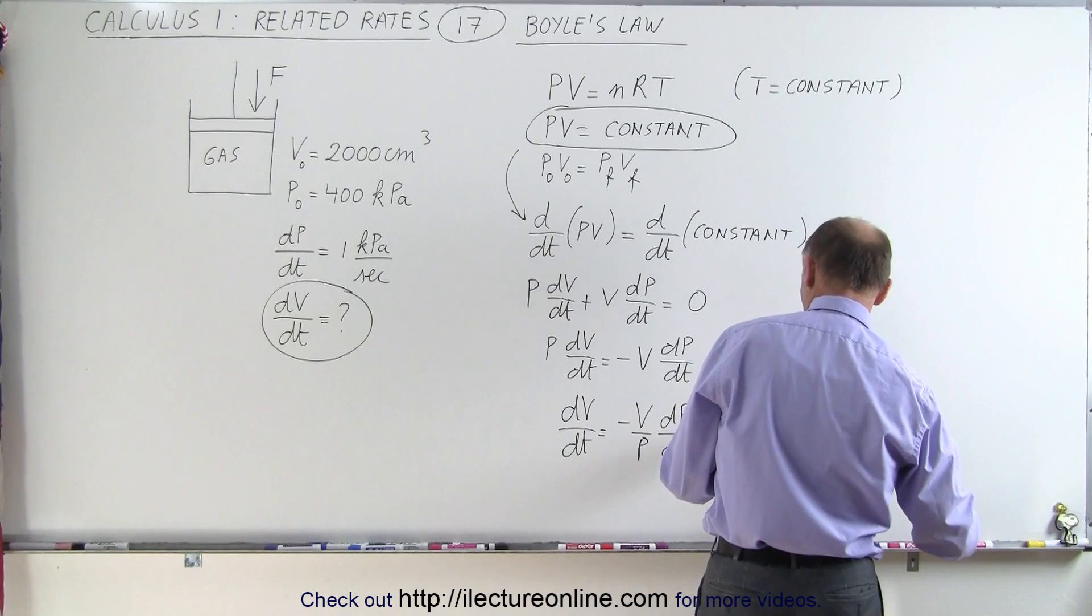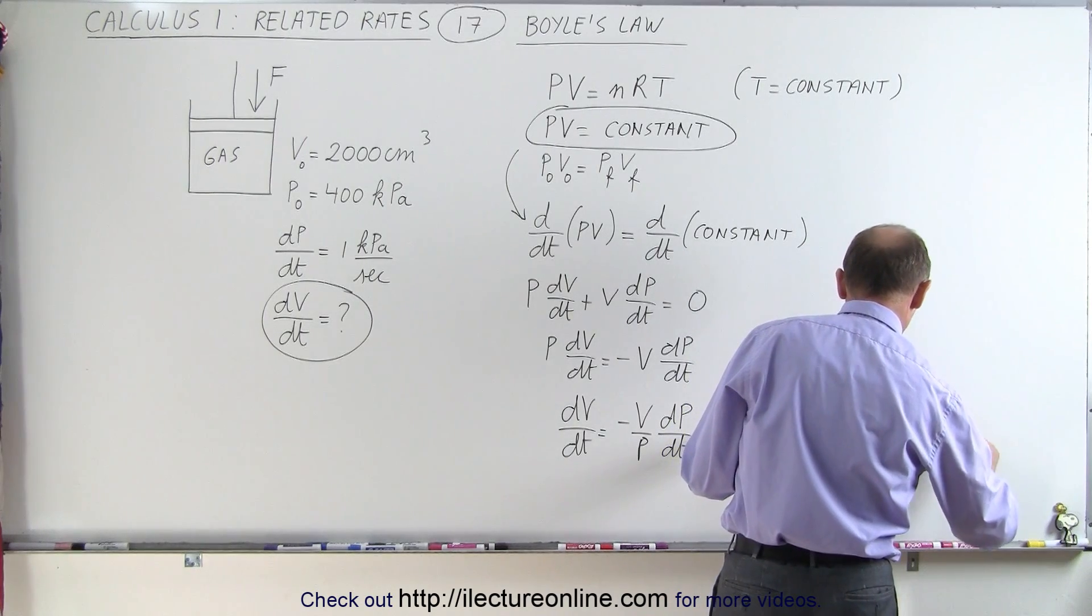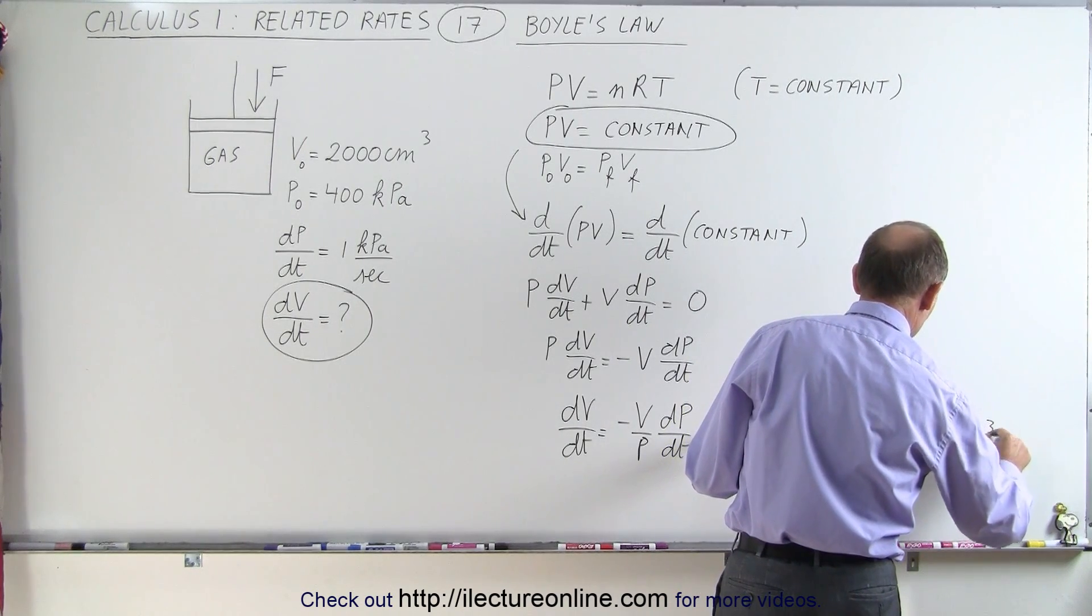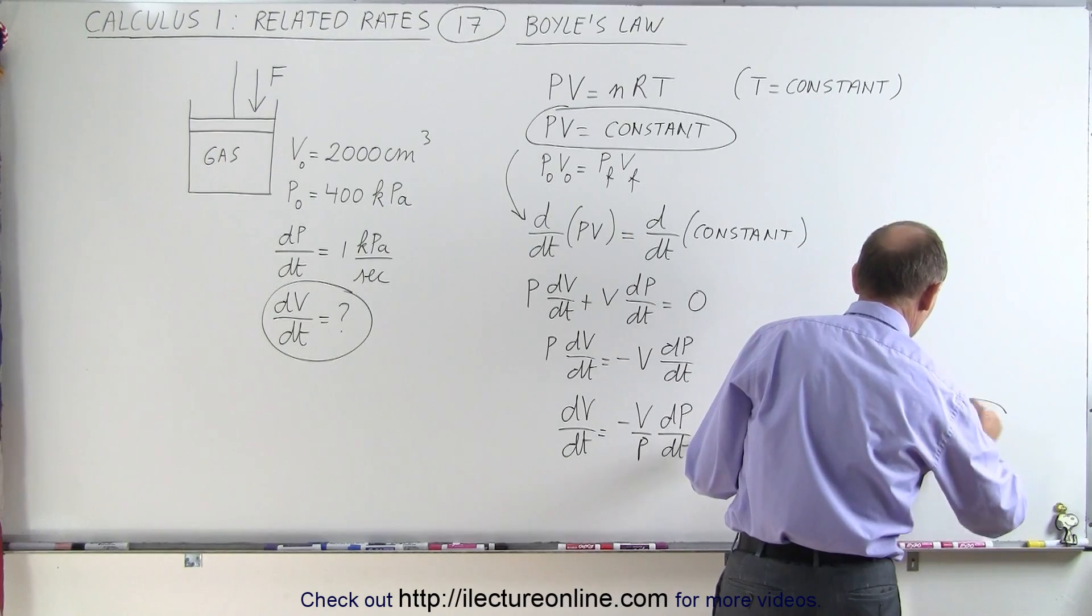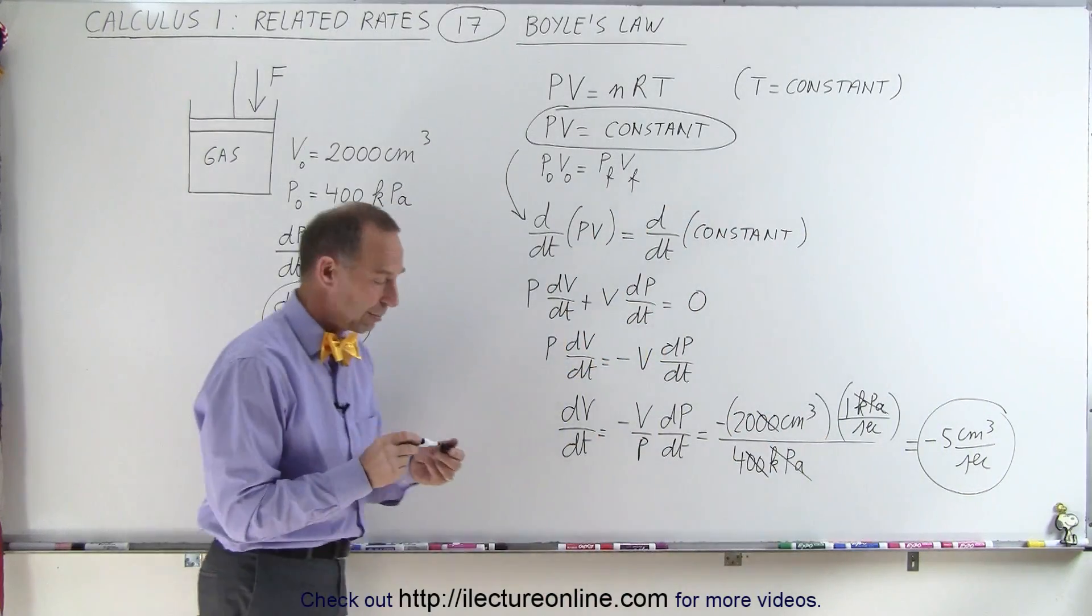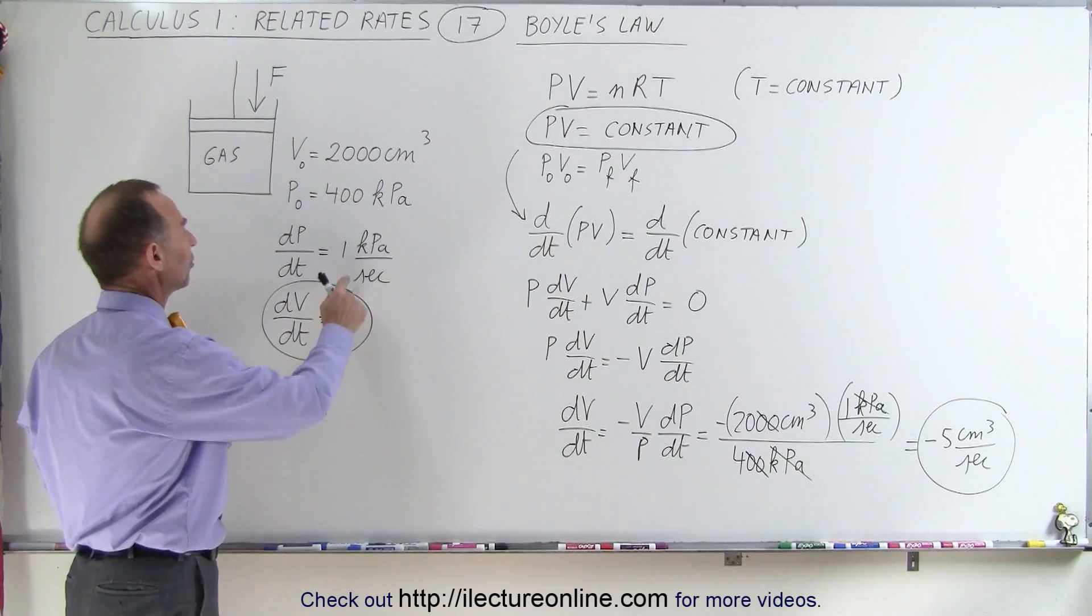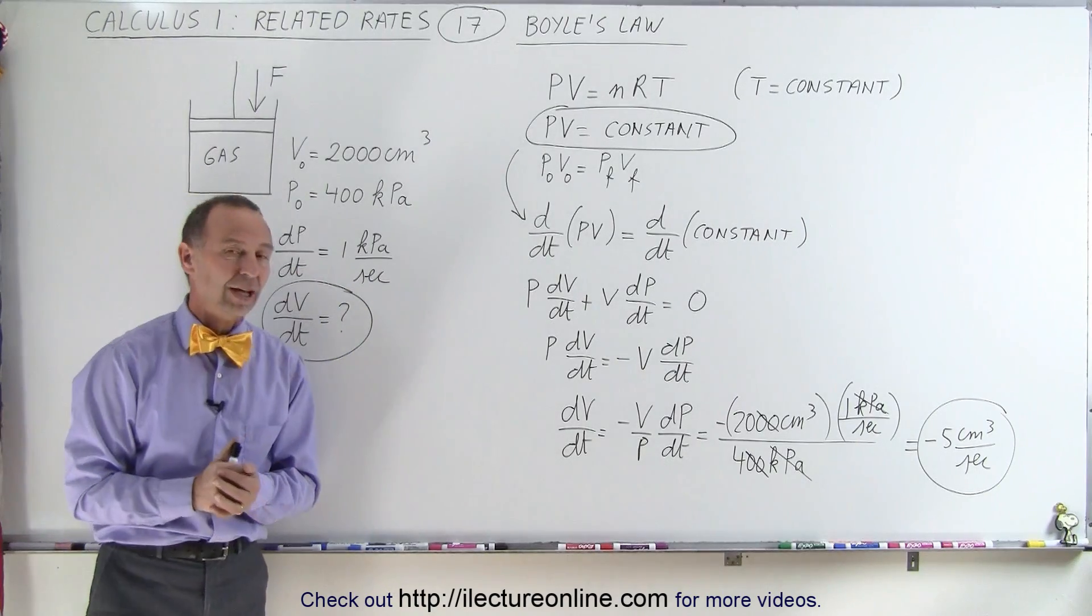That would be, and the negative sign, that would be minus 5 cubic centimeters per second. And that would then be the change in the volume per time when the pressure is increasing at 1 kilopascal per second.